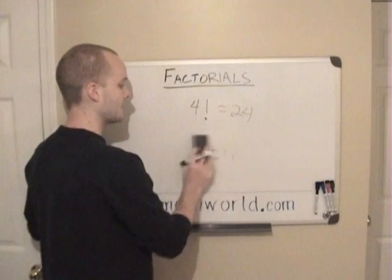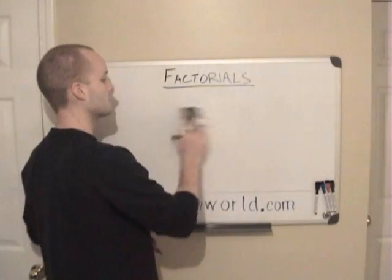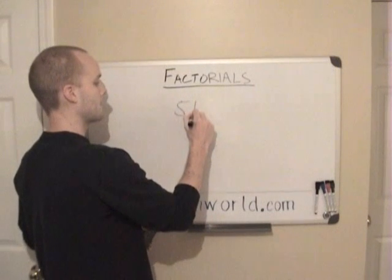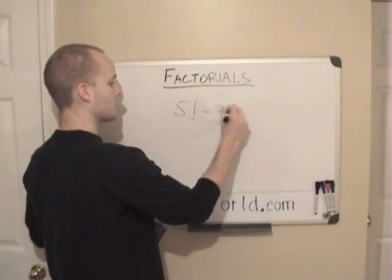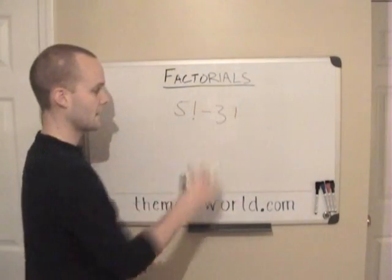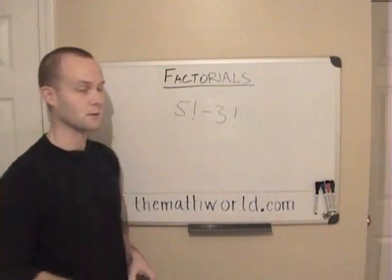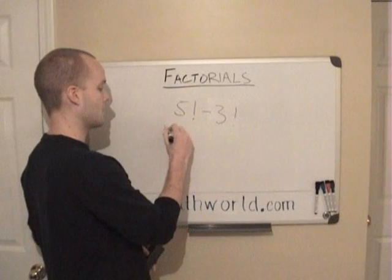Now you may see an addition or multiplication problem in here. Let's take a look at 5 factorial minus 3 factorial. Now in this case, first we're going to have to figure out what 5 factorial is. And since we just looked at it, it's 120.